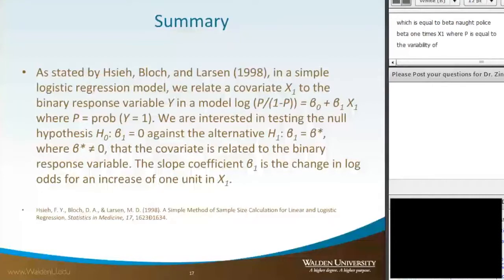We're interested in testing the null hypothesis, where β₁ equals 0, against the alternative hypothesis where β₁ equals β′, where β′ does not equal 0, that the covariate is related to the binary response variable. The slope coefficient β₁ is the change in log odds for an increase of one unit in the independent variable x₁.